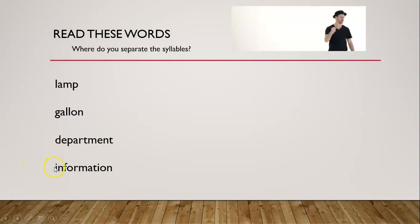I'd like you to read these words and ask yourselves where do you separate the syllables. The words are lamp, gallon, department, and information. I think I'm going to separate the word lamp like this, the word gallon into gal-lon, department gets to be de-part-ment, and information gets to be in-for-ma-tion.